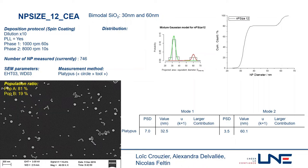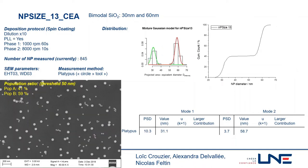For NP size 12, we can observe the two populations with a ratio of 81 percent to 19 percent. For NP size 13, we can observe the two populations with a ratio of 41 percent and 59 percent.